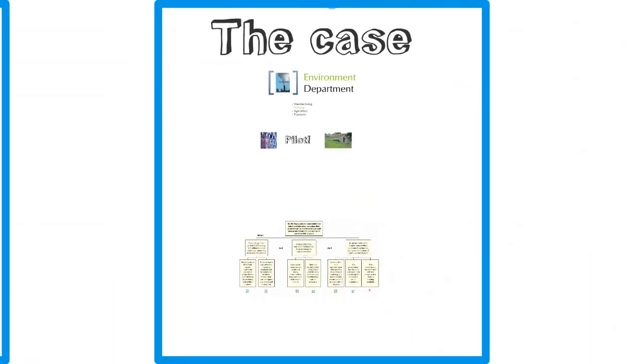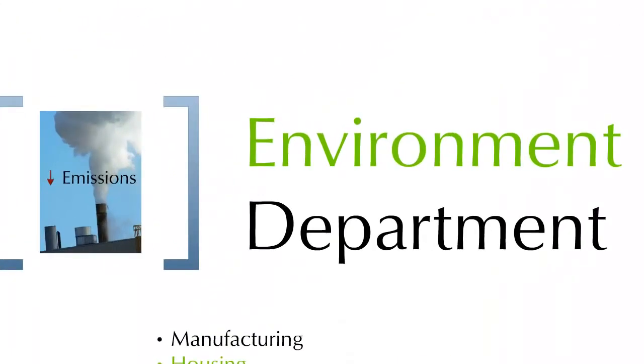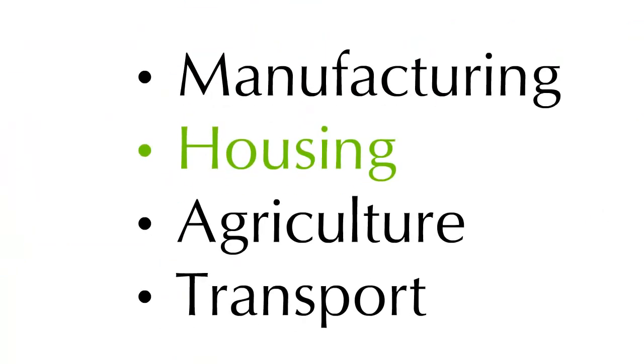Let's go back to our case with Mary. As we know, the Environment Department has set a large project team to look at reducing emissions. They're looking at four areas: manufacturing, housing, agriculture, and transport. Mary's project team has been asked to look at housing specifically, and they had a really interesting pilot that's been looking at ways that houses can be made more green and energy efficient.